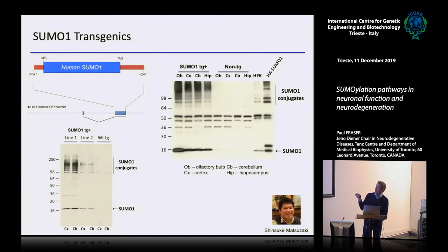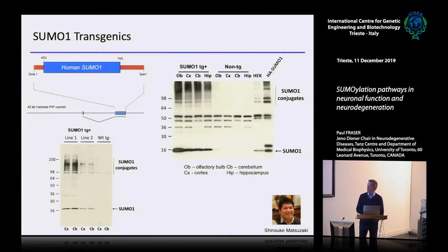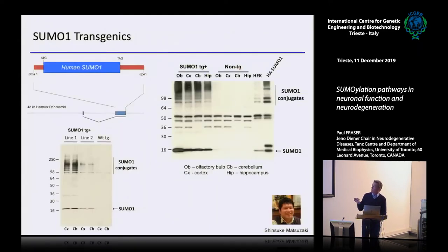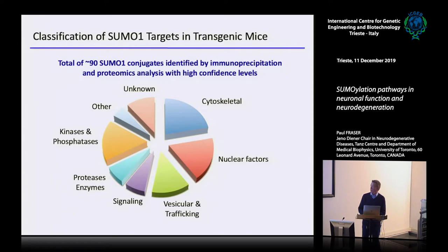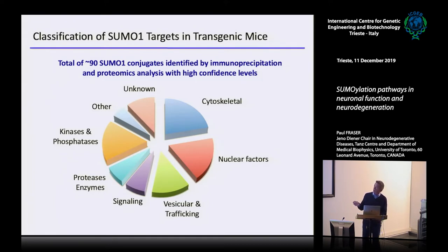The really surprising thing was the increased SUMOylation. We thought UBC9 would be the rate-limiting step, so you could only get enough conjugation depending on how much UBC9 was present. But in fact, UBC9 can handle as much SUMO as you can give it and over-conjugates these proteins. We took whole-brain homogenates from these animals and did a very large-scale proteomics study with a group in Toronto who came from Lee Hood's lab — a guy named Brian Rout, who worked on SUMOylation proteomics in chromatin remodeling.